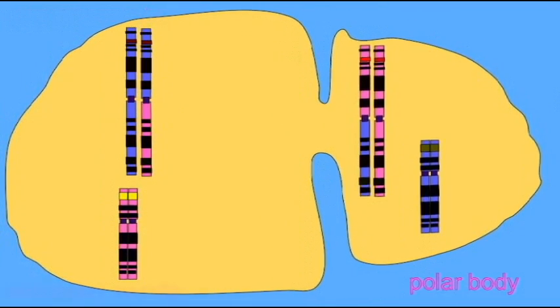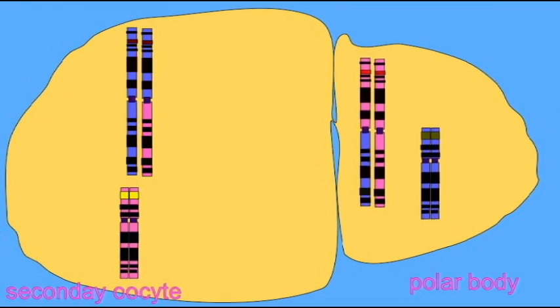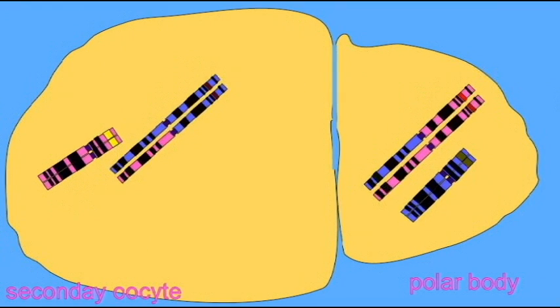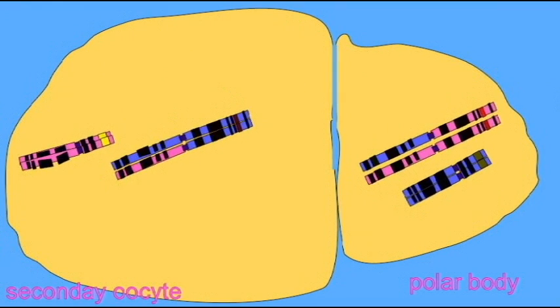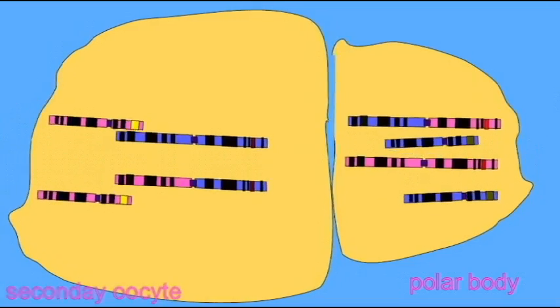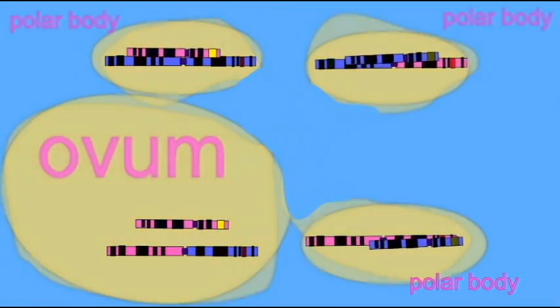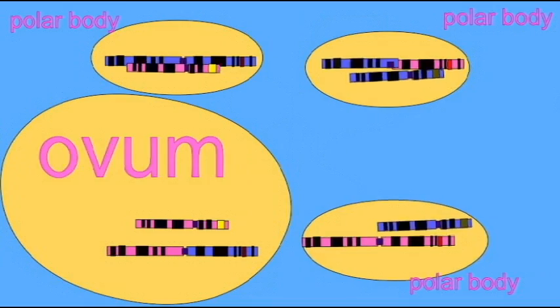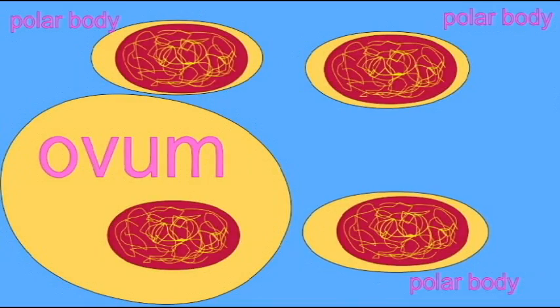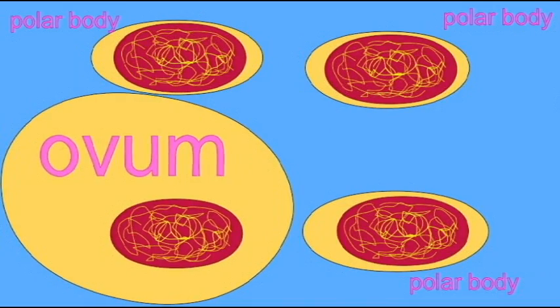In this way, all of the resources of the primary oocyte are maintained in one single cell, the ovum, so that the embryo can have adequate resources to carry it through the first several stages of development.